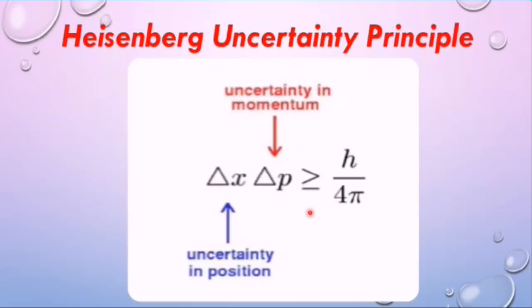Heisenberg Uncertainty Principle. Due to the matter wave nature of all quantum objects, Heisenberg stated a principle known as Heisenberg Uncertainty Principle which is a fundamental property of quantum systems. The principle states that it is not possible to determine accurately the position and momentum of a particle at the same time.